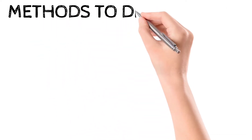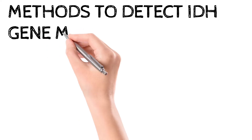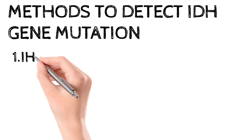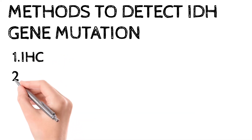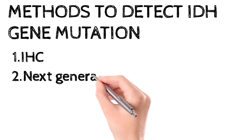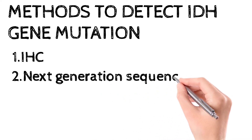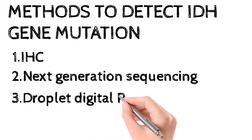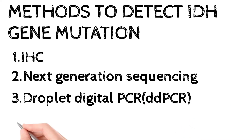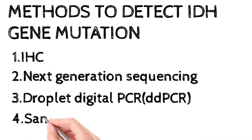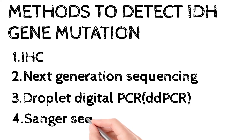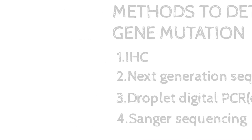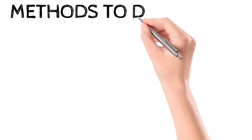Methods to detect IDH gene mutation include: first, immunohistochemistry; second, next generation sequencing; third, droplet digital PCR (ddPCR); and fourth, Sanger sequencing. All these methods are used to detect IDH gene mutation.